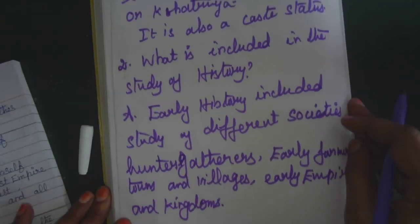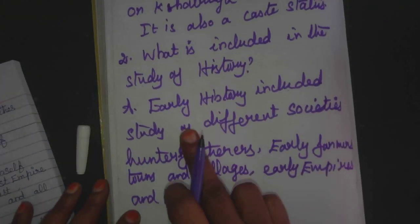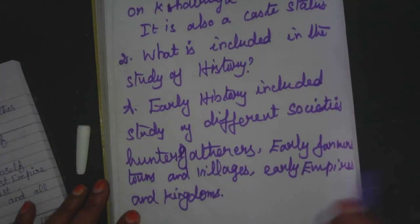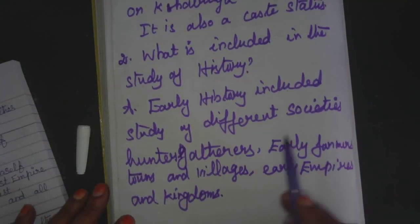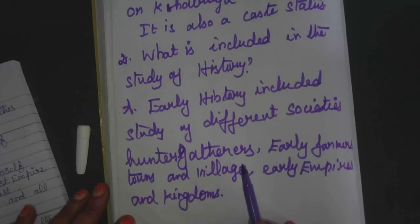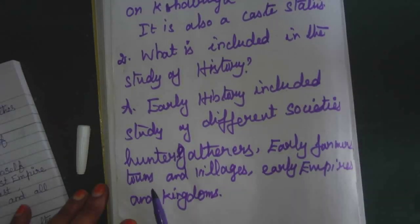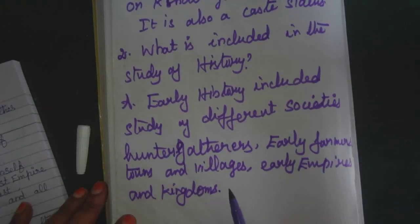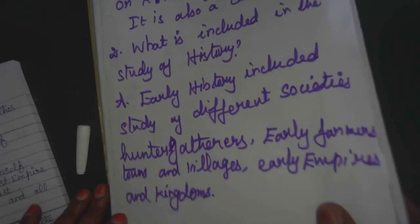What is included in the study of history? Early history included the study of different societies, hunter gatherers, early farmers, towns and villages, early empires and kingdoms.